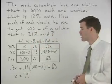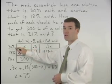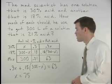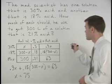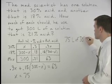Going back to our chart, x represents the amount of 30% solution that we have. So we know we have 75 liters of 30% solution.